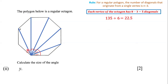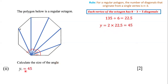So if we want to figure out the size of angle y, we know that angle y only accounts for two of these spaces. That means angle y is equal to 2 multiplied by 22.5, which means y is equal to 45 degrees. So the size of angle y is 45 degrees, and that is the answer to this question.